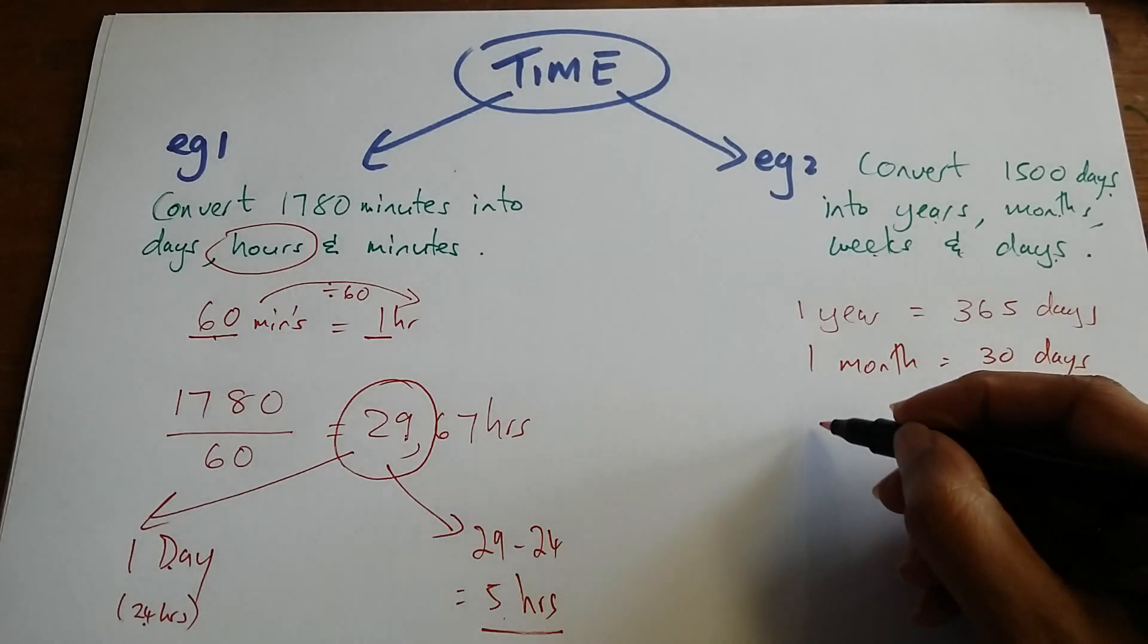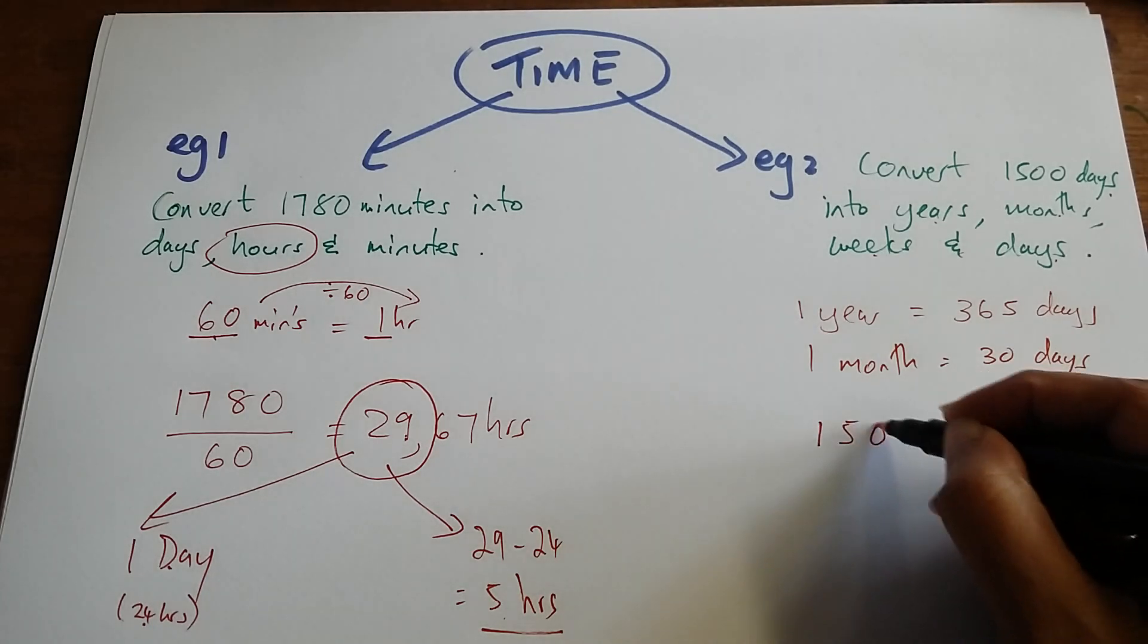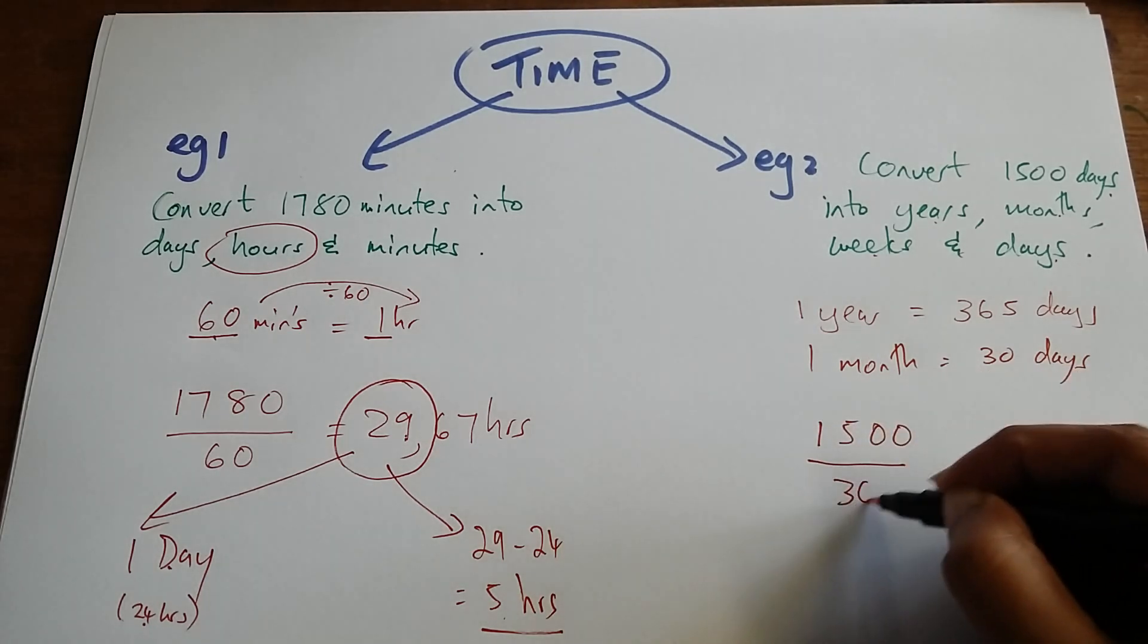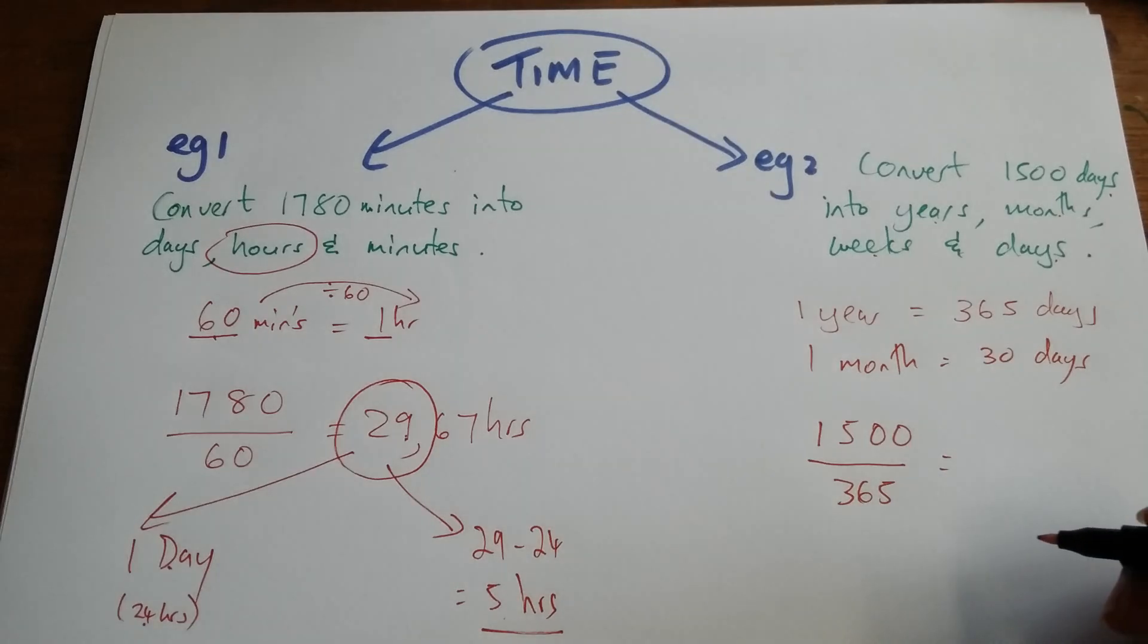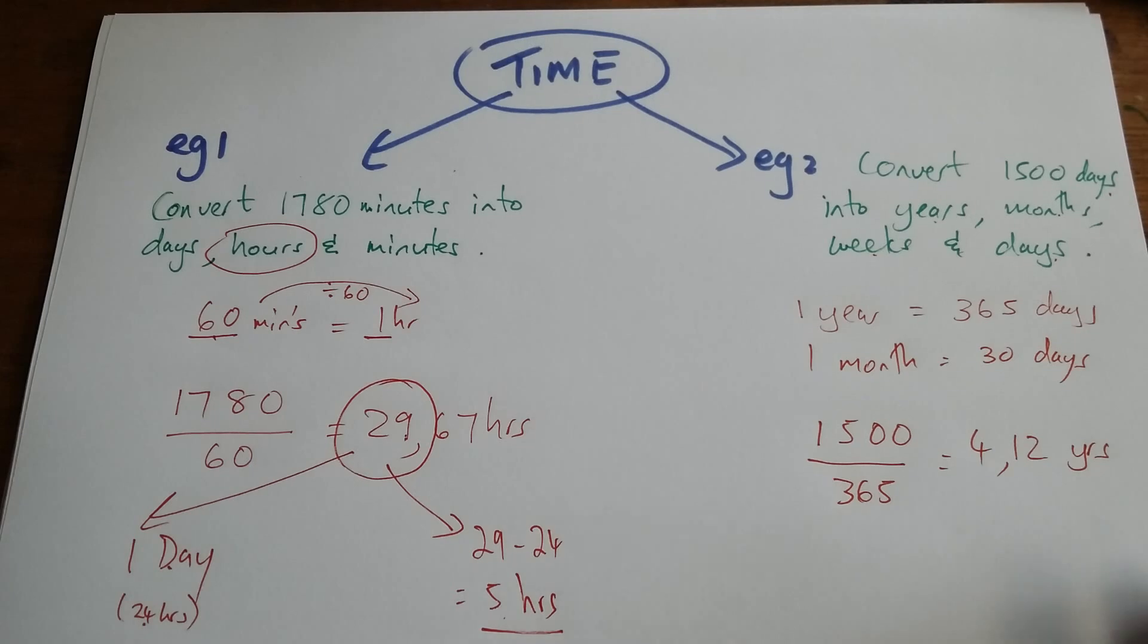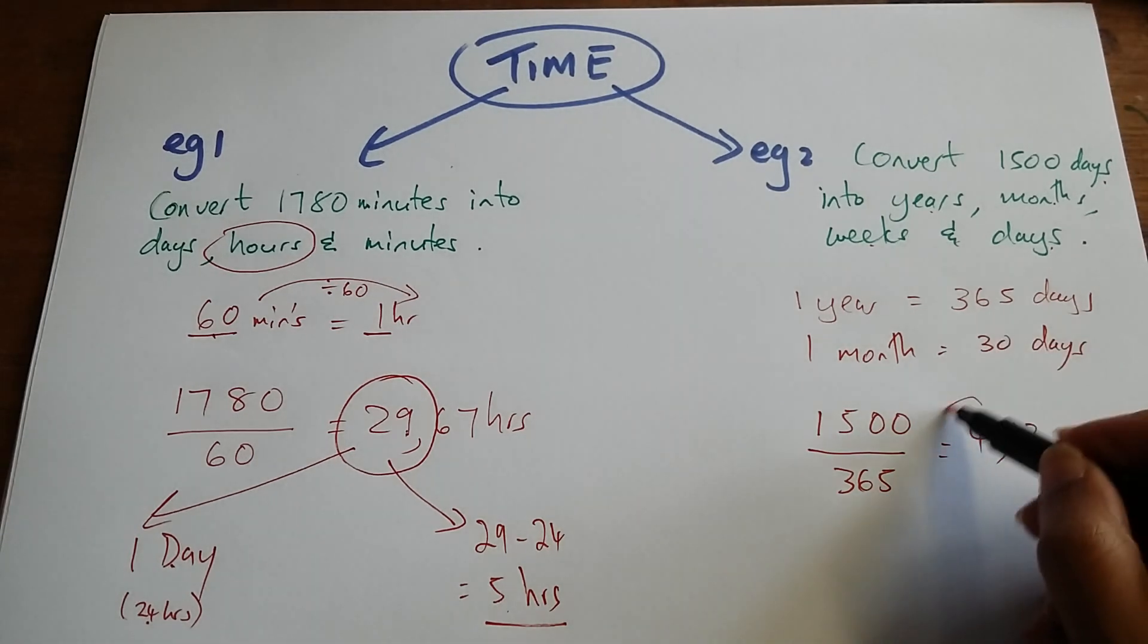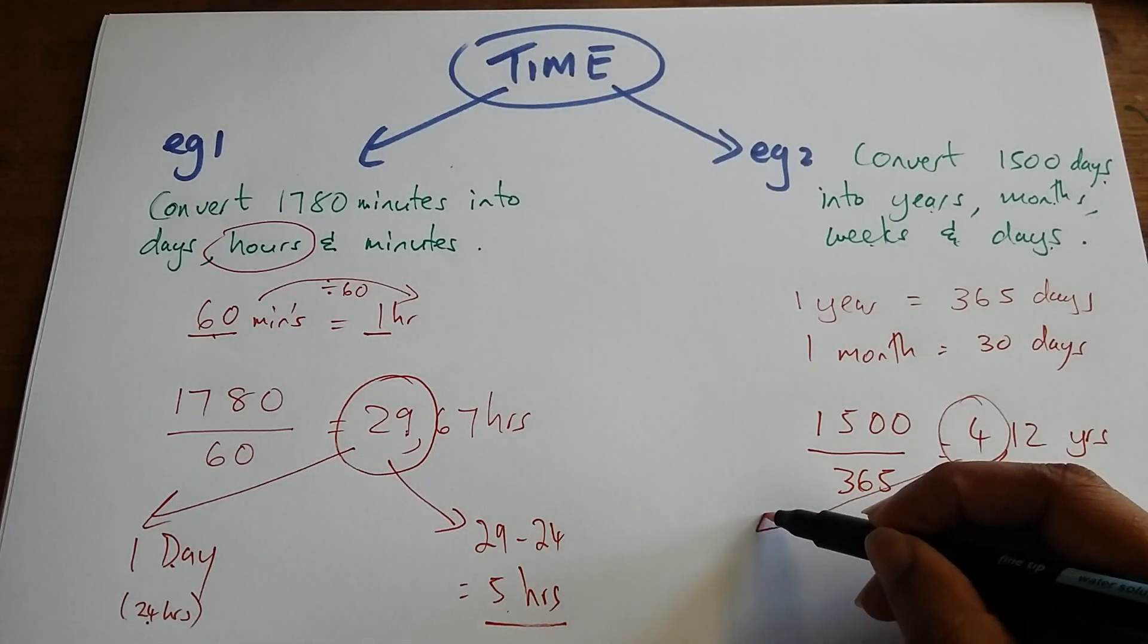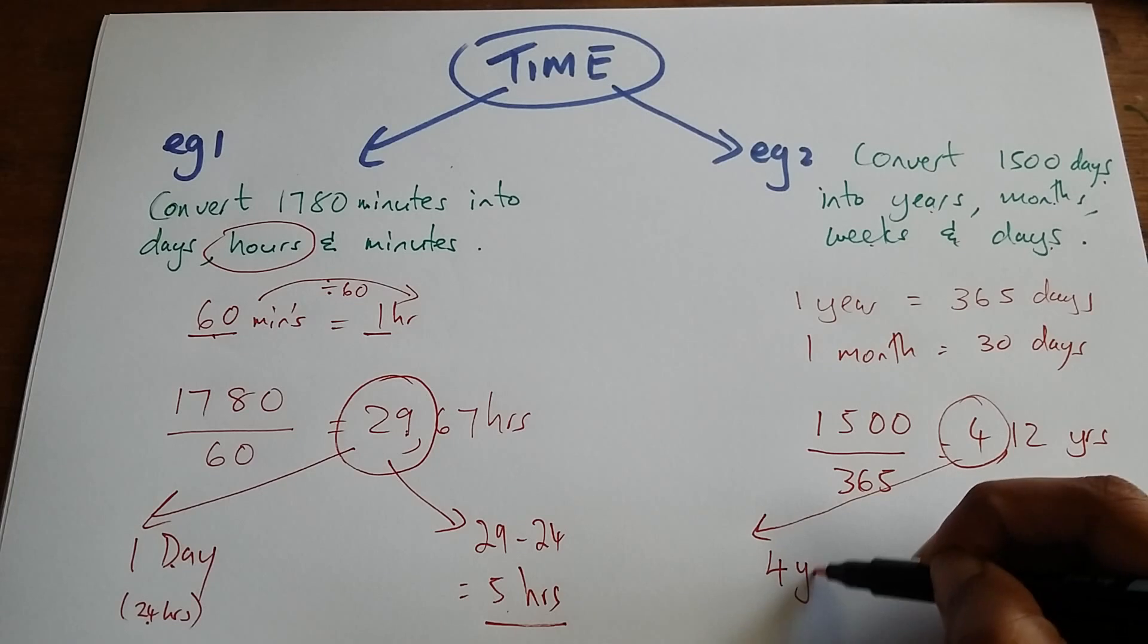So we'll start 1500 divided by 365. That's going to give me 4.12 years. Again, I'm going to work with the whole number only, so I'm going to remove the 4 years.